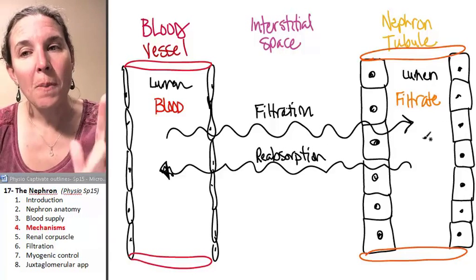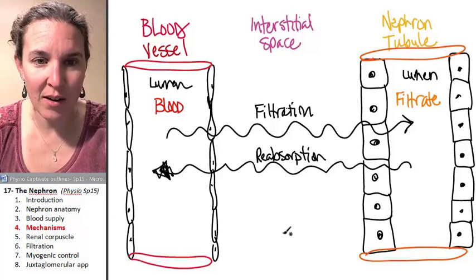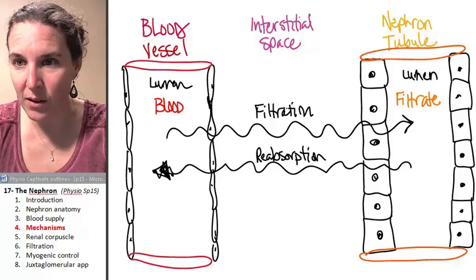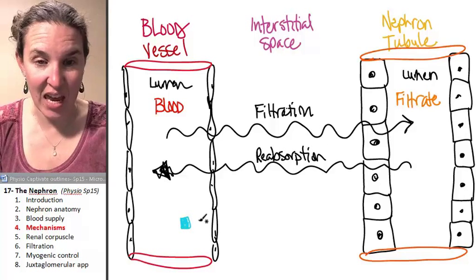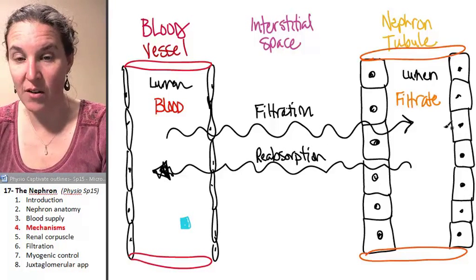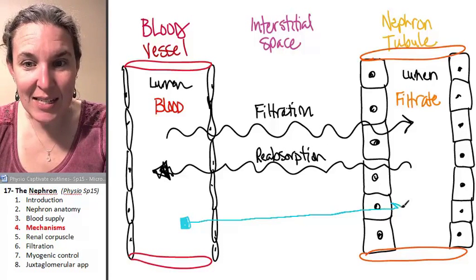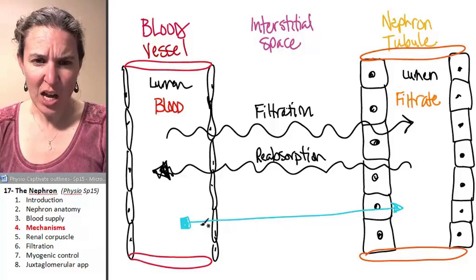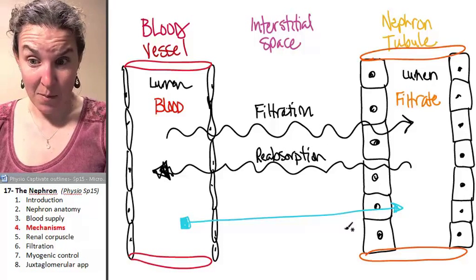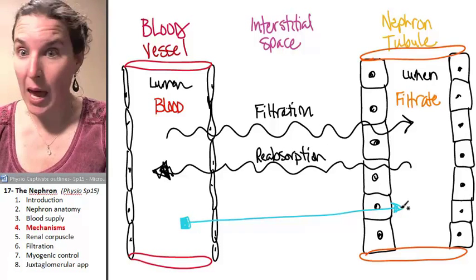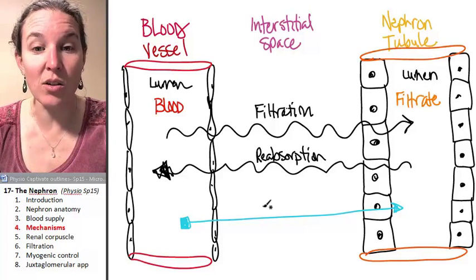There's another process that is extremely specific. If I have a very specific thing, not just mass movement of stuff via filtration, but if I have something really specific that I want to take and dump into the filtrate, do you see how I made my line really straight to show you that I'm being very specific and deliberate about taking this thing and putting it into the tubule? If it's specific and deliberate, it is called secretion.